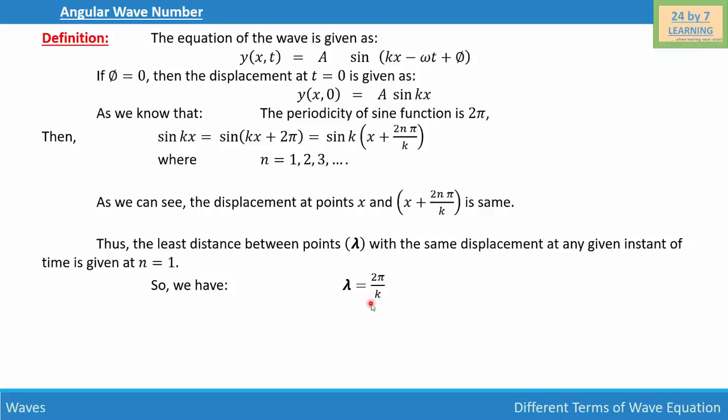And if we simplify further, we can write k is equal to 2 pi over lambda. And this is basically the wave number. So k is basically known as the angular wave number. And the SI unit of angular wave number is radian per second. And this is how we define the angular wave number.